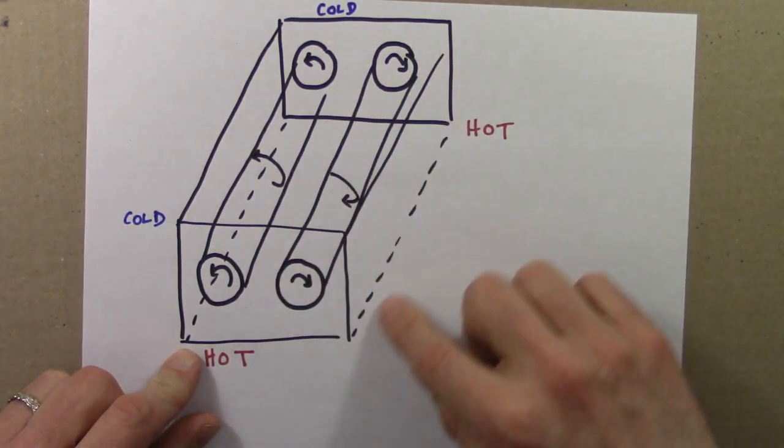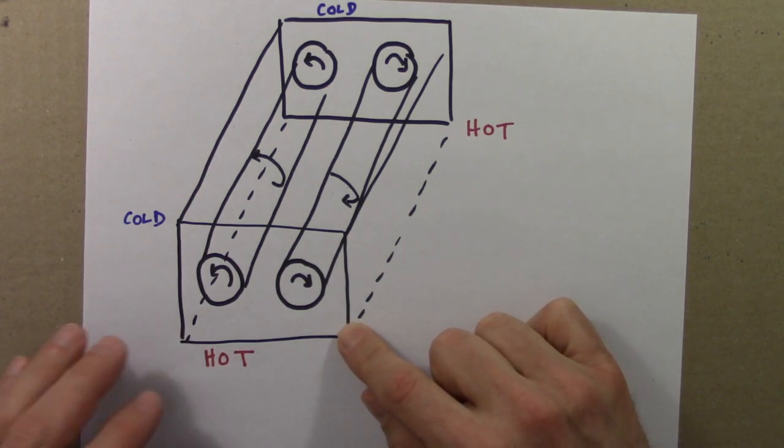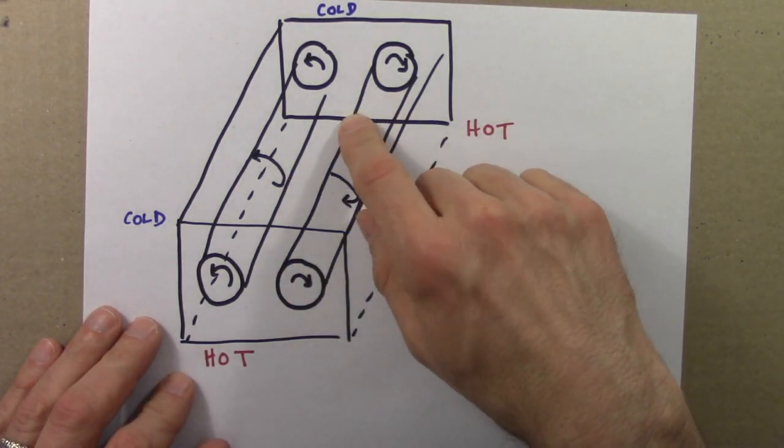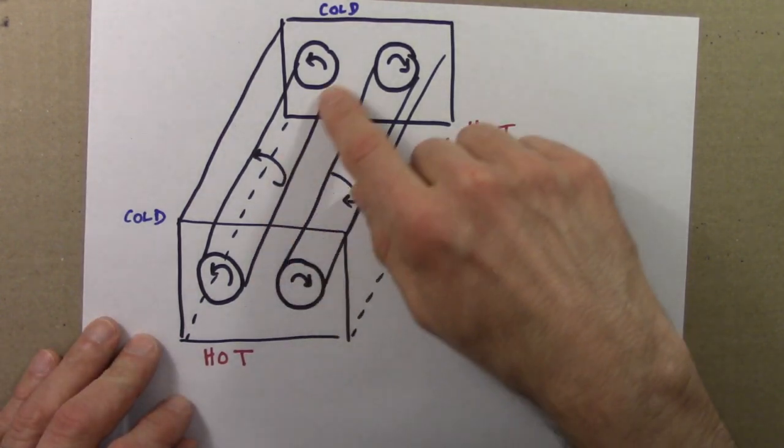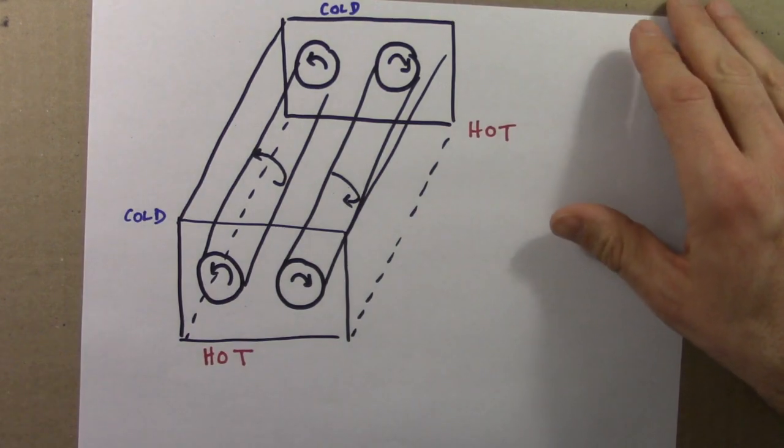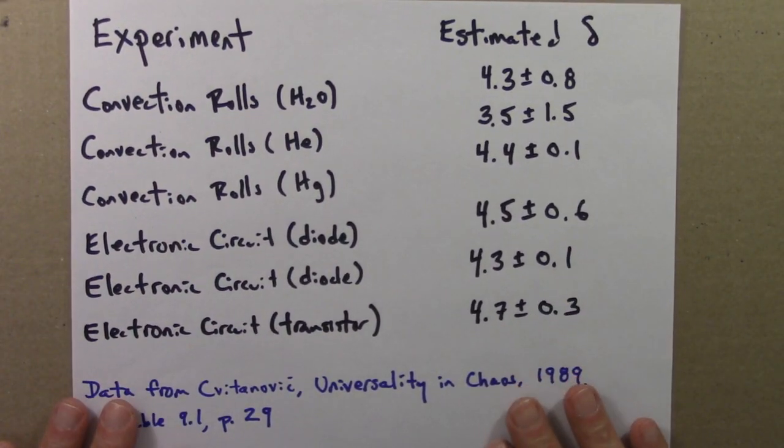So this is a system that's been quite thoroughly studied, and pretty quickly after the discovery of universality and chaos in 1978. So let me describe the results of doing some of these experiments. So here's a table showing the results of six experiments.